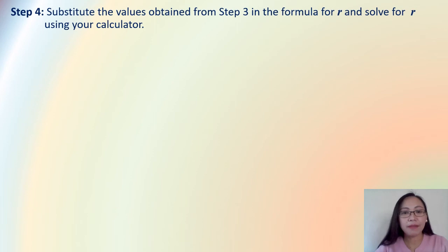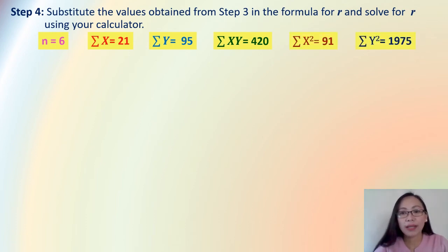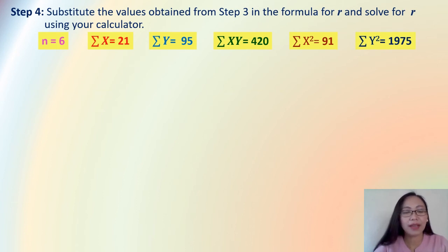So, you have the values obtained from step 3 in the formula for R and solve for R using your calculator. So, advanced information you will be needing your calculator for this solution. And we recall that we will have these values. N is equal to 6. Summation of X equals 21. Summation of Y equals 95. Summation of XY is 420. Summation of X squared is 91. And summation of Y squared is 1,975. And we will also have to recall the formula.